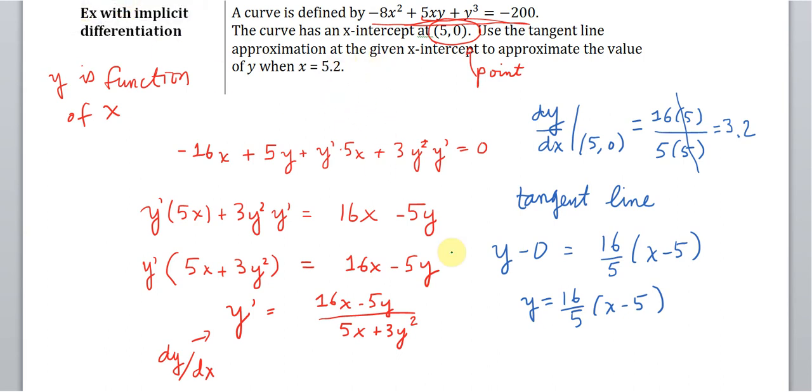So that's approximately, and this is the approximation, the approximate value of y(5.2). So 16/5 times 5.2 minus 5, or that's just 0.2.